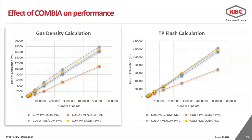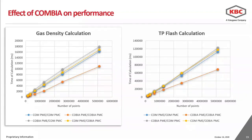We ran calculations for binary mixtures for both gas density and TP flash calculations to test the COMBIA effect. The results show that the effect of COMBIA is negligible compared to COM — the bottleneck is COM itself. The COM PME with COBIA PMC and the COBIA PME with COM PMC combinations are very close in performance to the pure COM PME/COM PMC case, showing that COMBIA overhead is not significant and the bottleneck is COM.